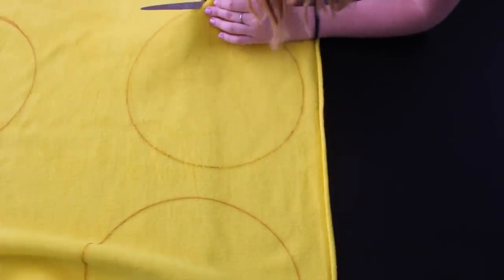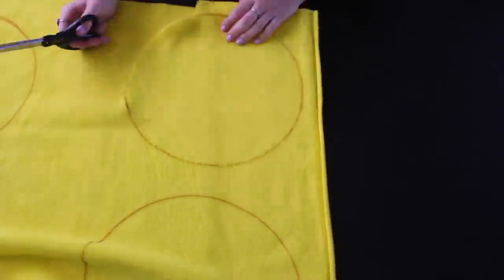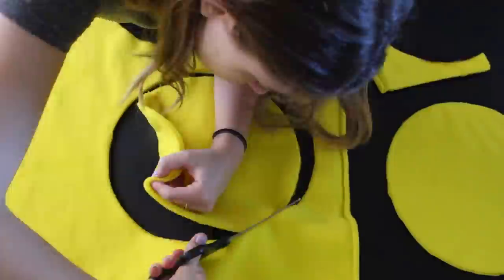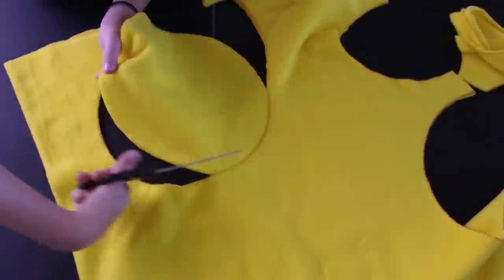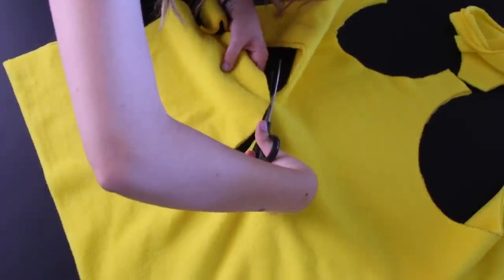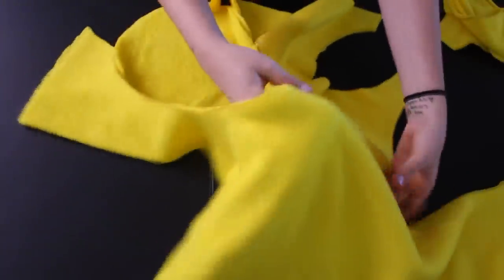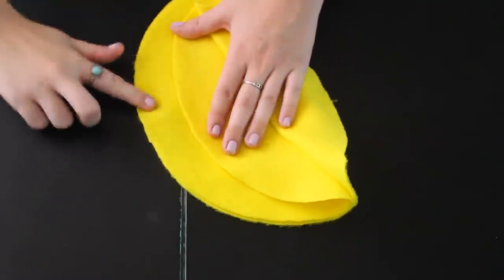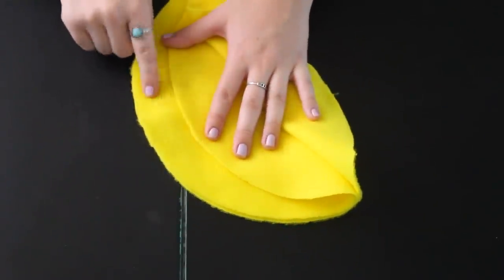So then what you're going to want to do is cut out your little circles for your emojis. This is pretty self-explanatory and you want to make sure that you keep them doubled up and they're actually together.